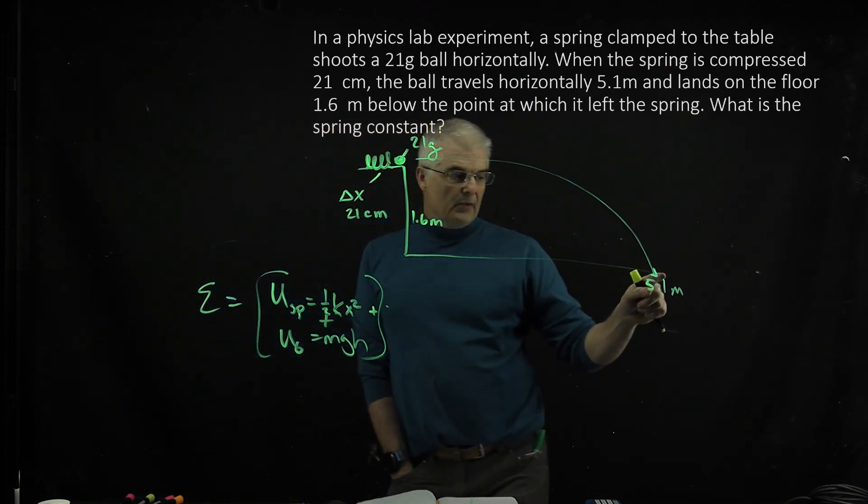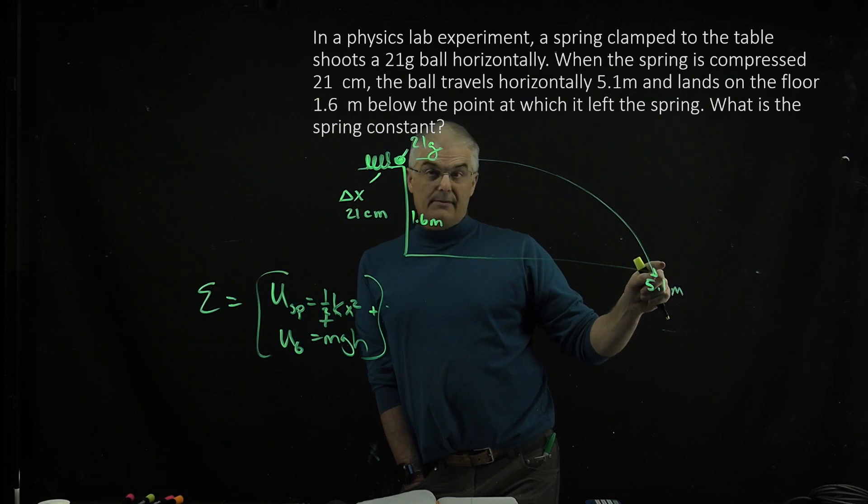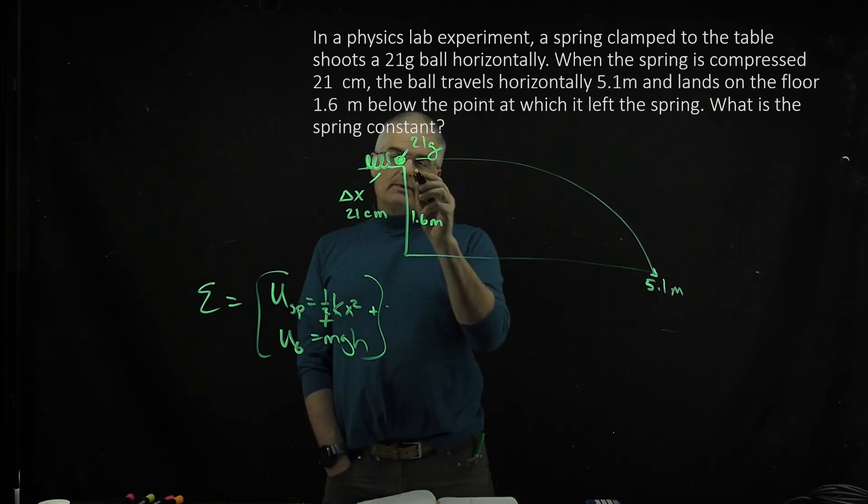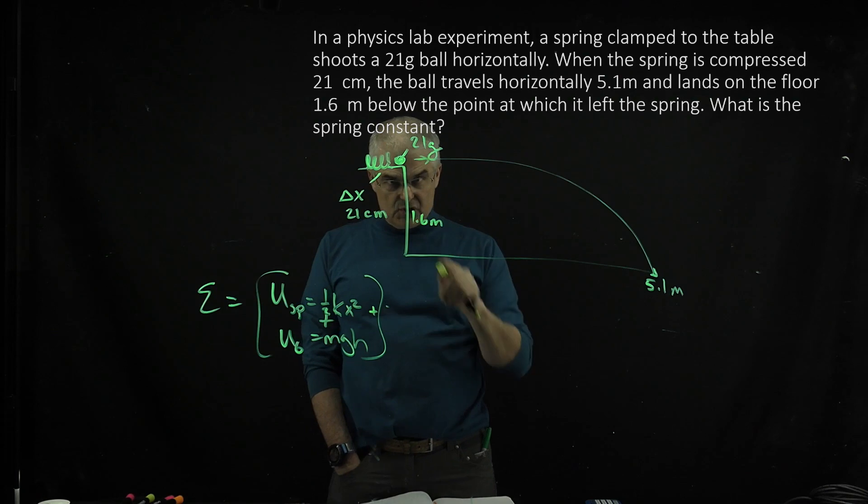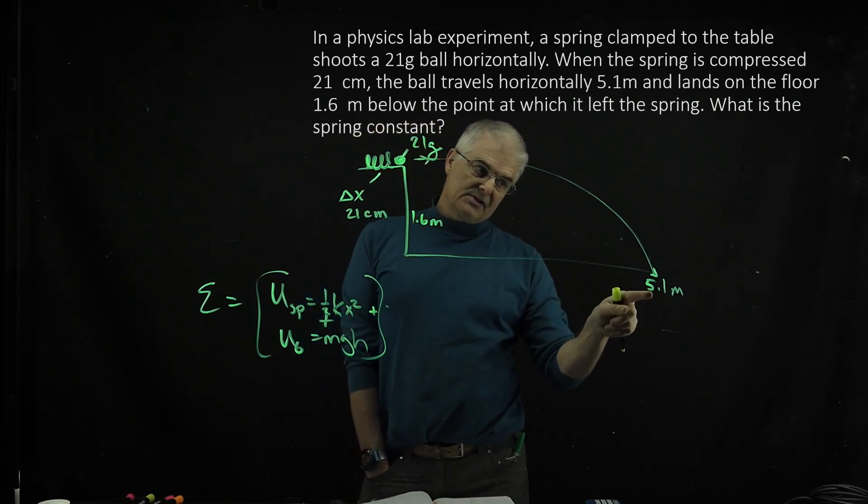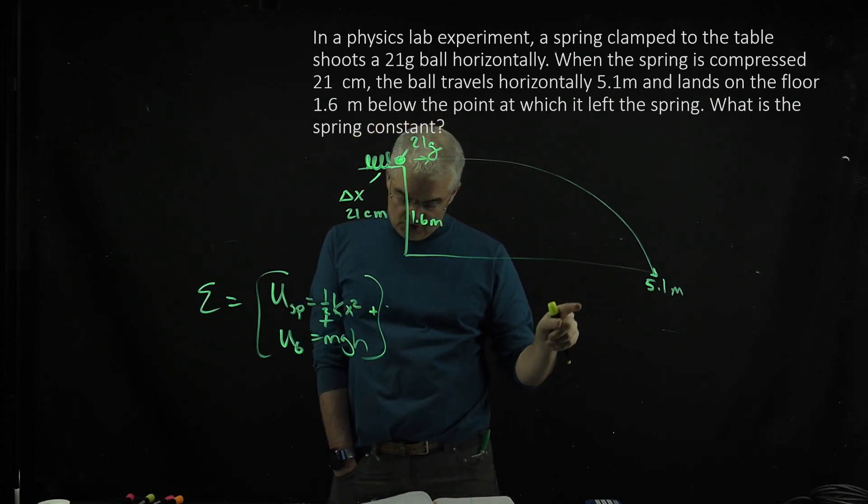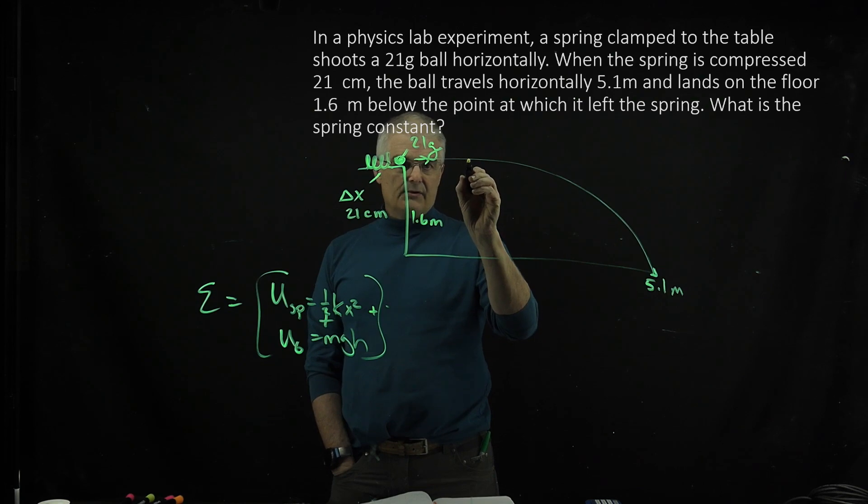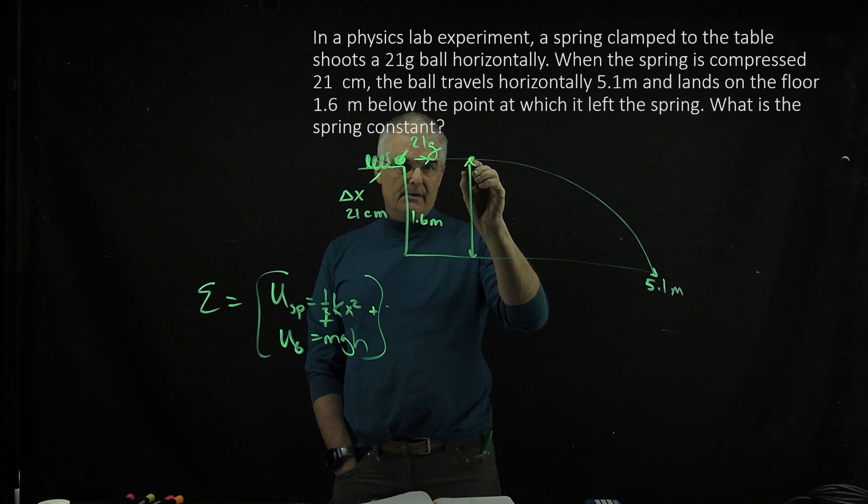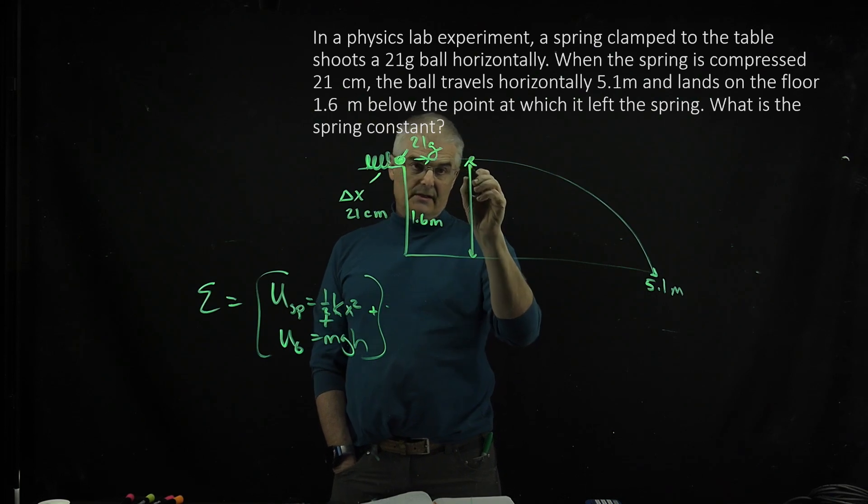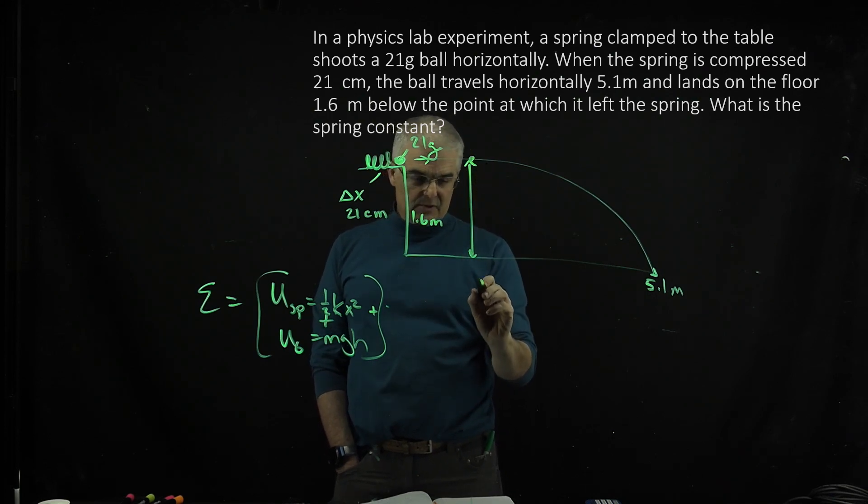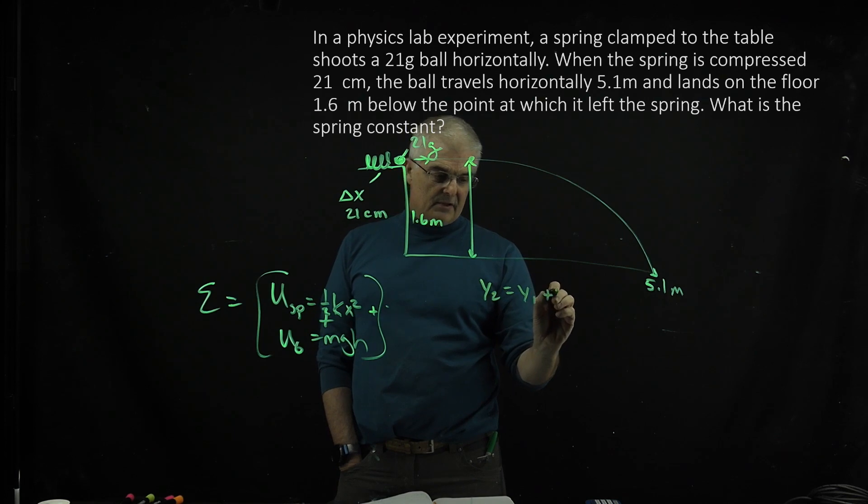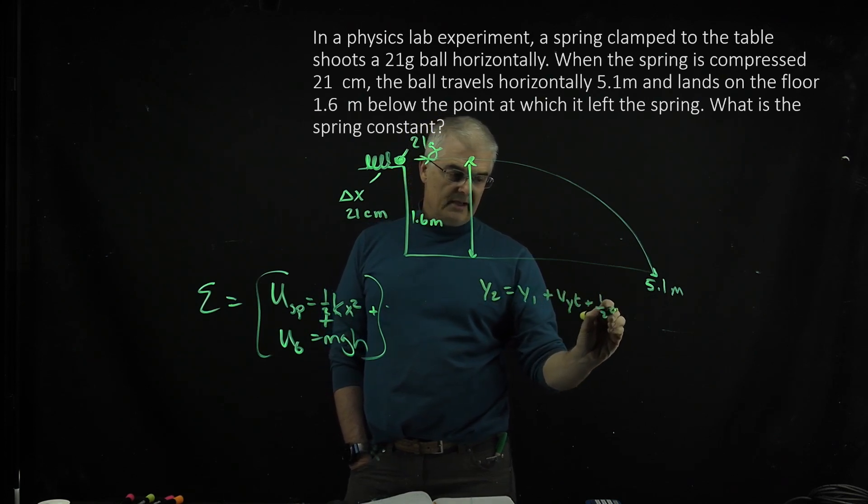And we know that it lands some distance away. What I'd like to know is how much speed it leaves from. So we have to do a little bit of kinematics. If you think about this for a moment, if I take a ball and just drop it, I'm trying to find the time. How much time does it take for the ball to drop? Since it's only going to be launched horizontally,